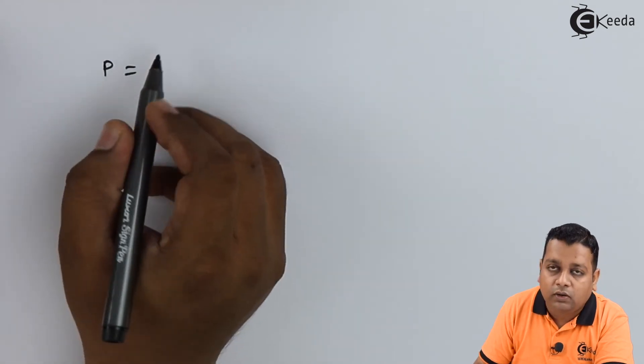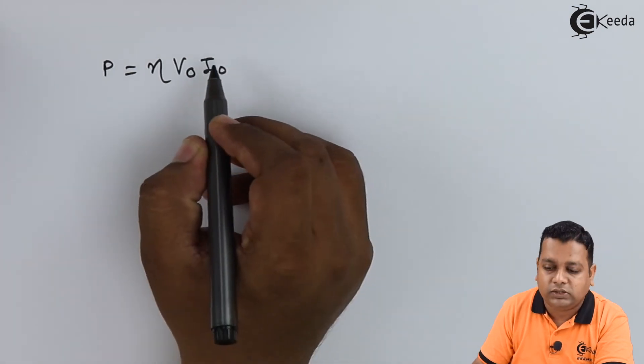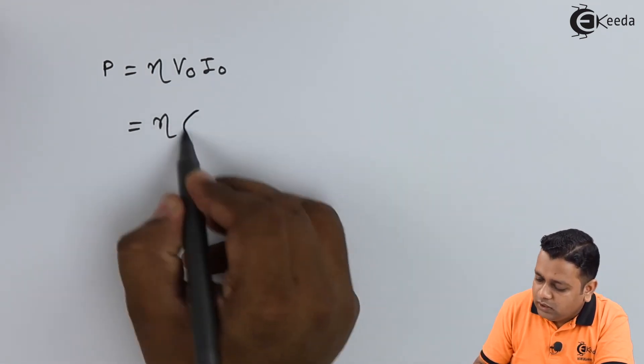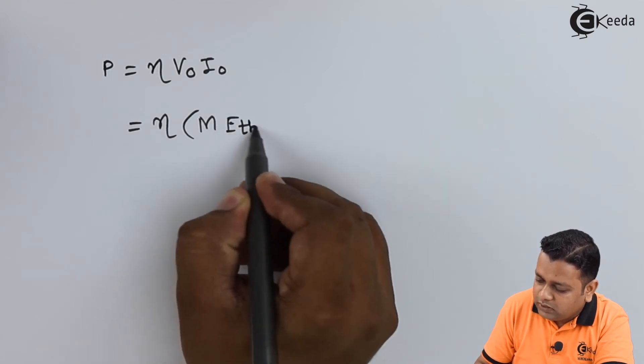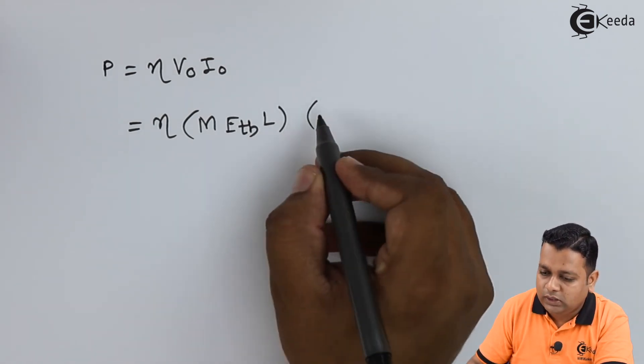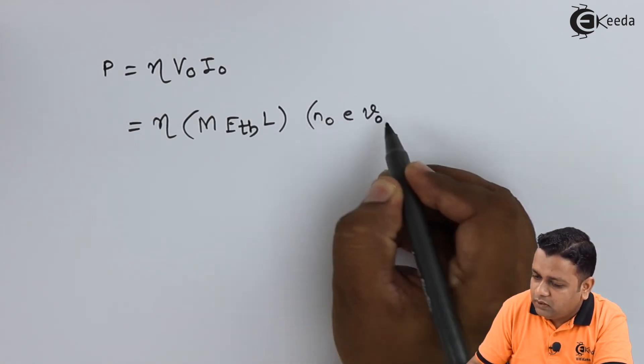We shall be taking the output power considerations. With respect to the LSA diode, the output power can be expressed as capital P equals eta into capital V0 into capital I0, which can be further expressed as the efficiency eta in multiplication to capital M into E suffix TH, the threshold value, into the device length capital L, and the second bracket contains the doping concentration N0, the electric charge, the velocity V0 along with capital A. In this representation of the output power we have several parameters. We shall be explaining the parameters one by one.